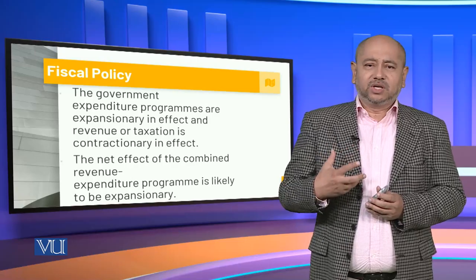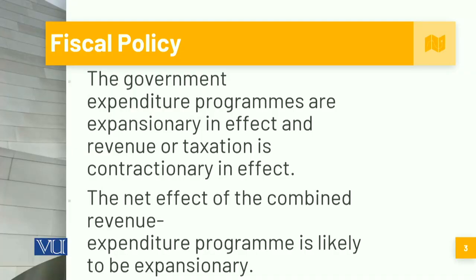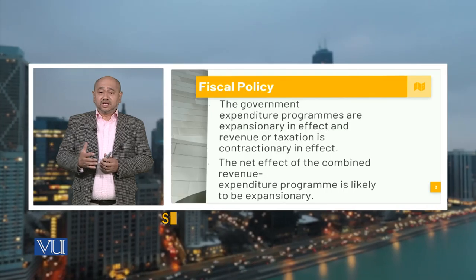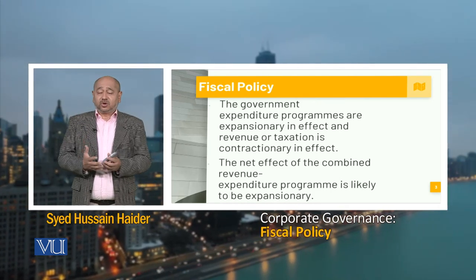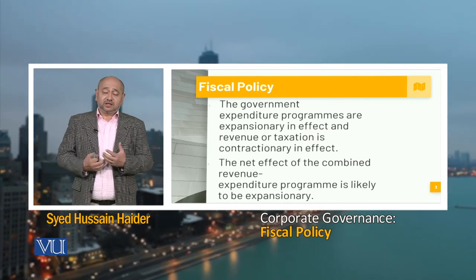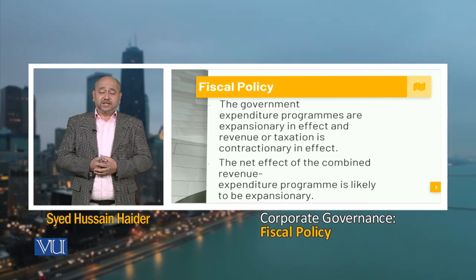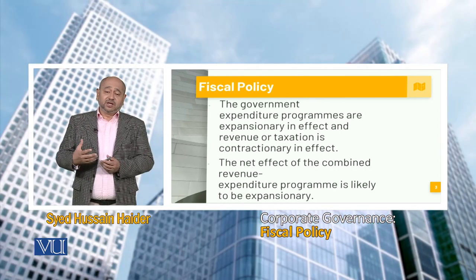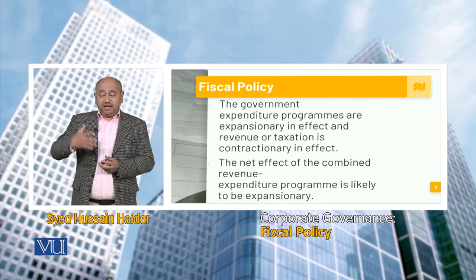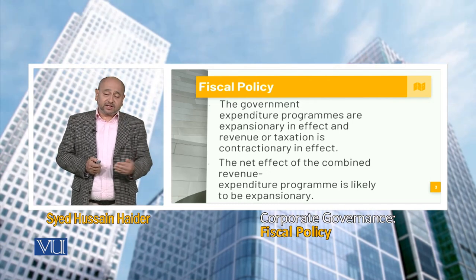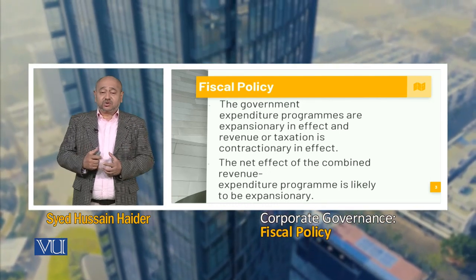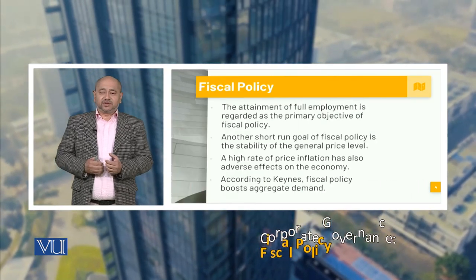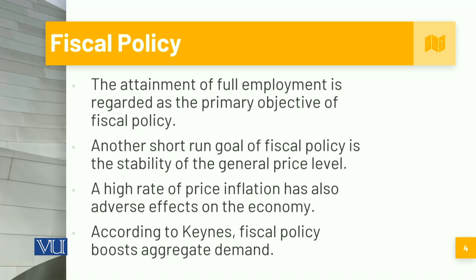When talking about government expenditure programs, we have to see whether they are expansionary or contractionary in effect. It becomes contractionary when there are a lot of taxes — and taxes can be direct or indirect. The expenditure program of any country is expansionary when job opportunities are being created and money is put into circulation. With more taxes, the economy tends to constrict because everyone comes into the ambit of taxation, be it direct or indirect.